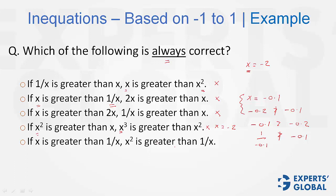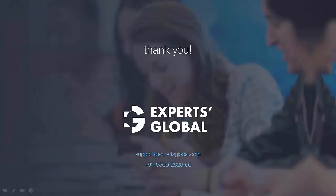E has to be the right choice, but let's verify for conceptual clarity. x is greater than 1/x when x is a big positive number or a very small negative number like −0.1. In both cases, x squared is also greater than 1/x: for x = 2, x squared is 4, which is greater than 1/2; for x = −0.1, 1/x is a big negative number and x squared is positive, so it is always greater. Therefore E will always be correct. Such questions are generally 700-plus level, and getting these right helps lift your score significantly. GMAT shots are deliberately kept brief — for an elaborate explanation, please refer to the Stage 1 videos.